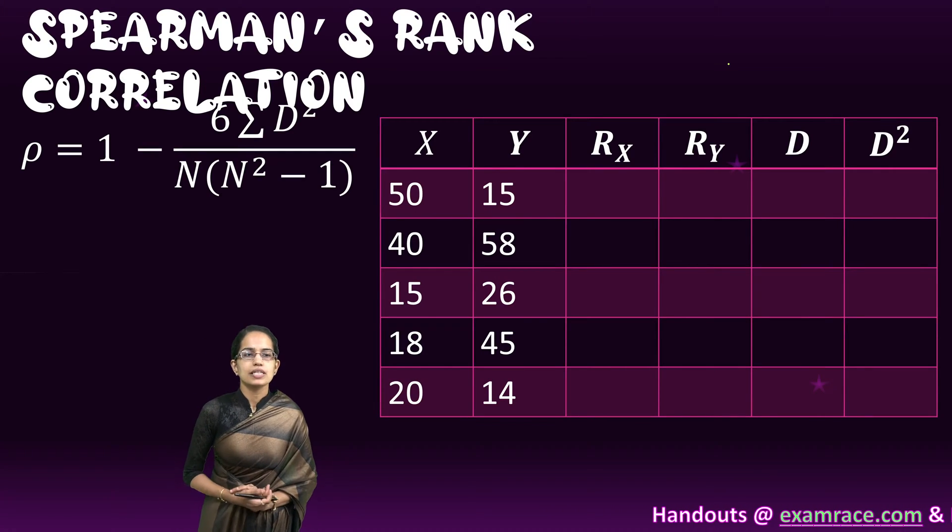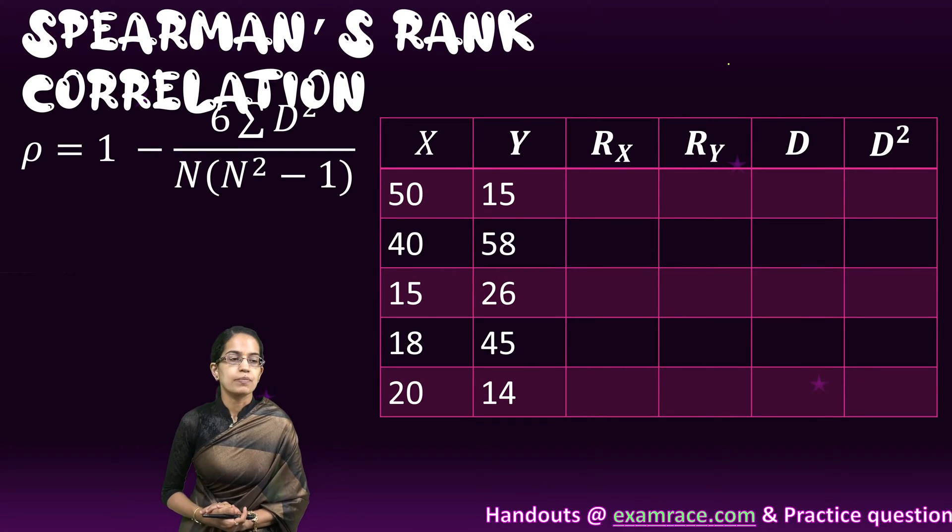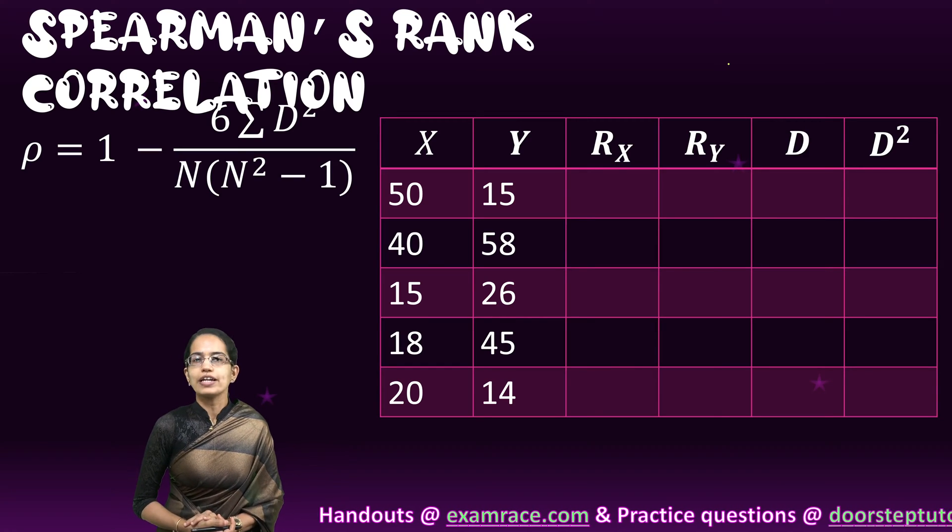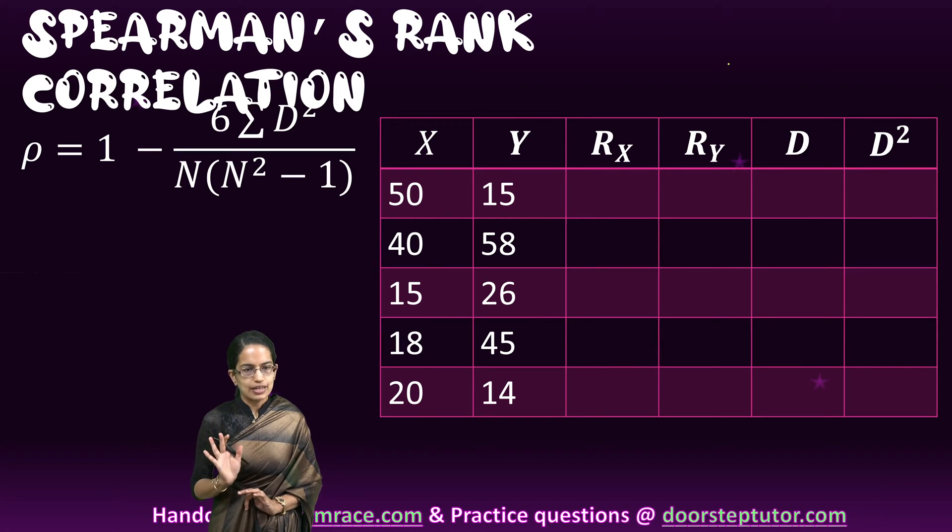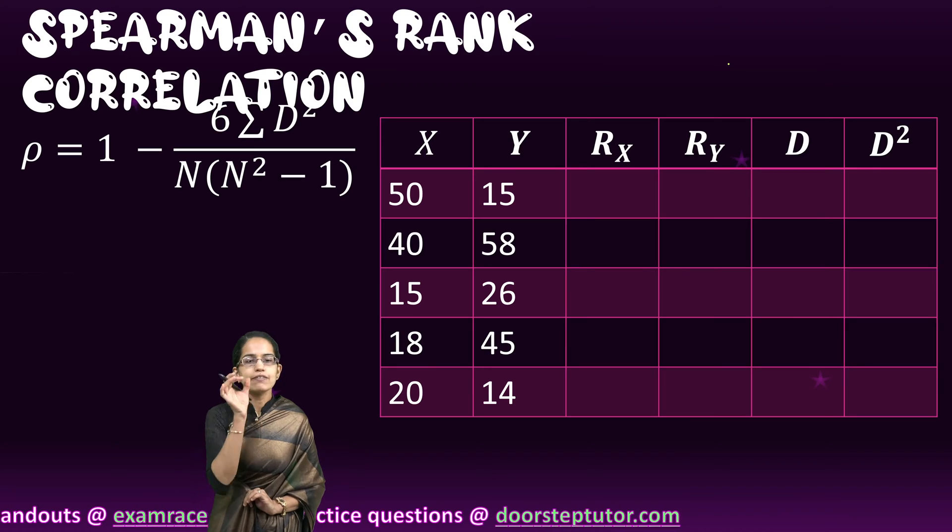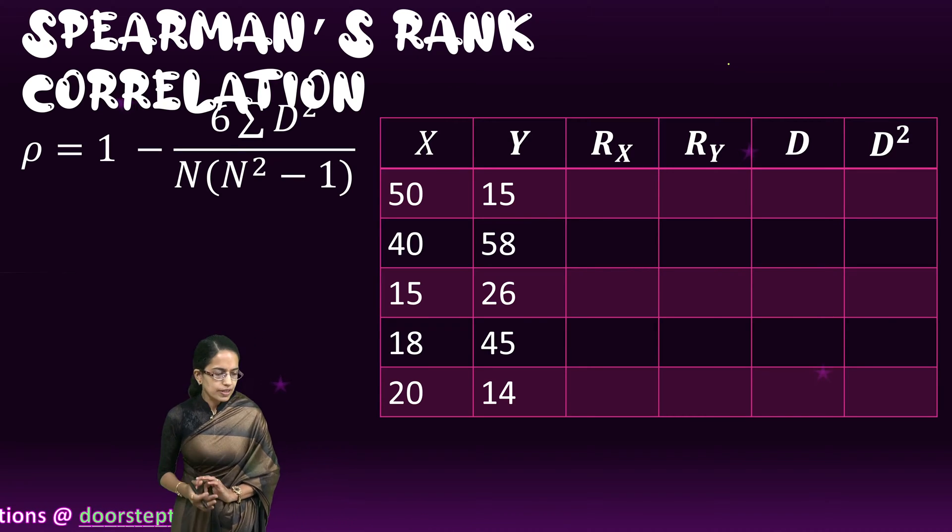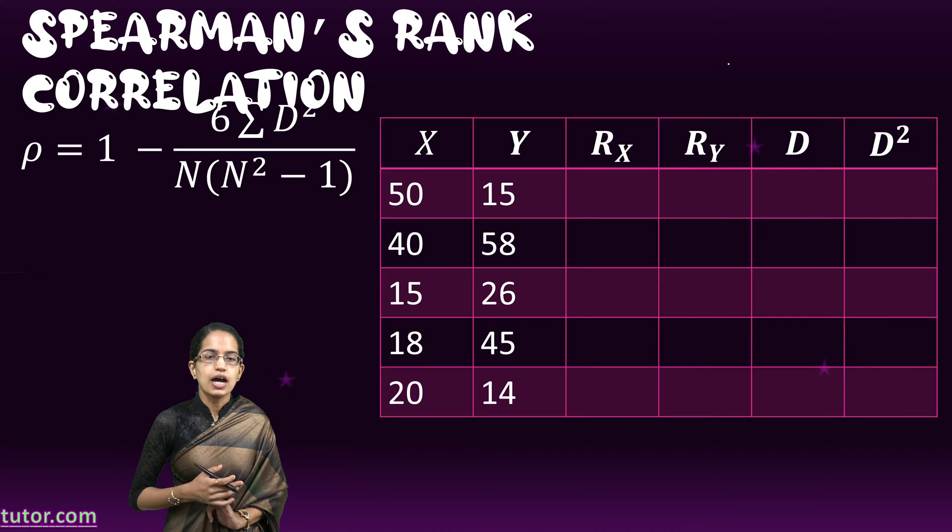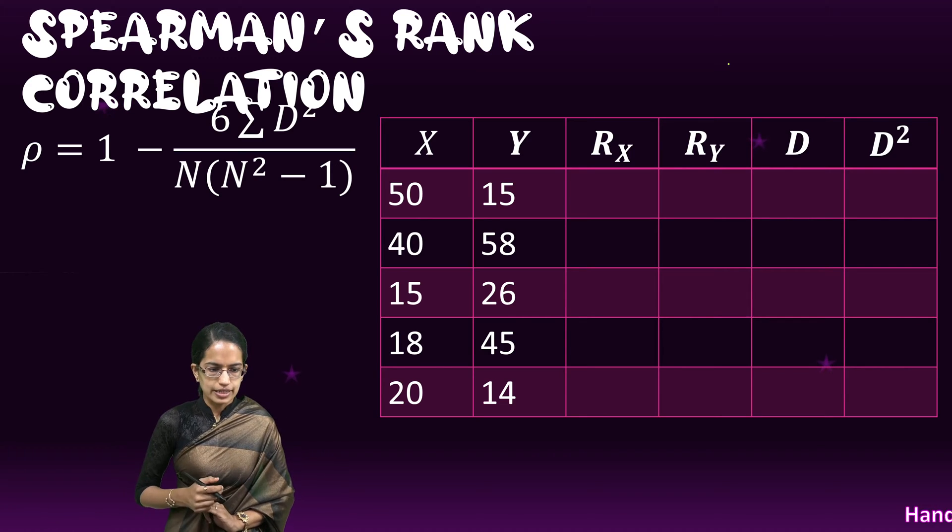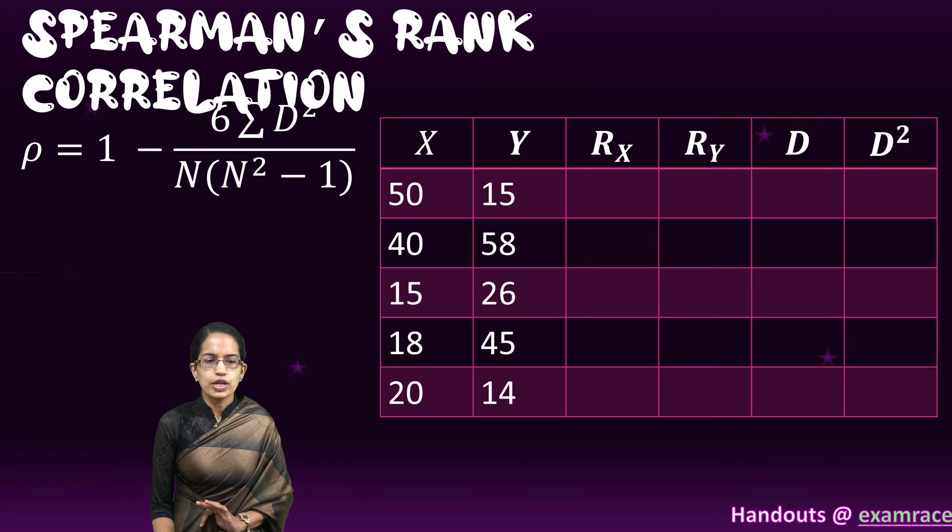Named as Spearman's rank correlation devised by Spearman, the idea is to find the correlation by ranking. How do we do that? I have two sets of numbers. First, we need to rank the numbers. And when we are ranking the numbers, the highest value would be ranked the highest. I have the values for X and Y.